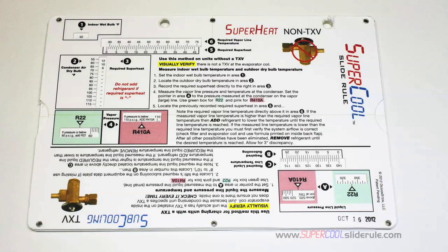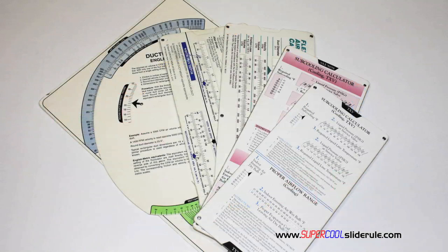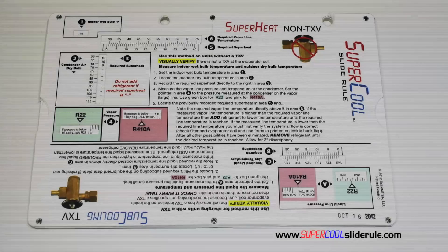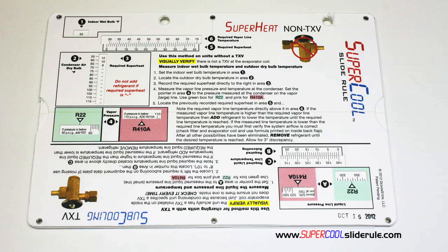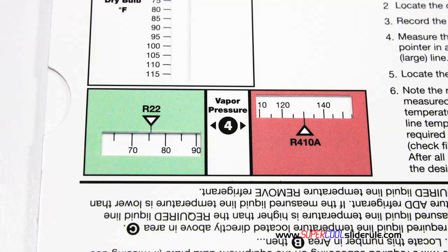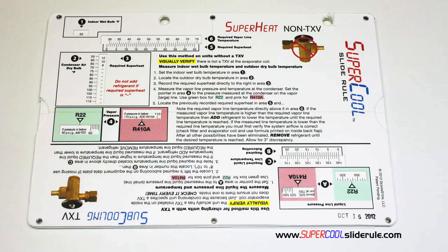I'd like to take a minute to introduce you to the coolest tool in the HVAC industry. Historically, technicians have carried four or five different slide rules — one for R22, one for R410A, one for metal duct sizing, one for flexible duct sizing, and yet others for diagnostics or troubleshooting. Thankfully those days are gone. This one tool will allow you to charge a system with R22 or R410A using either the superheat or subcooling method.